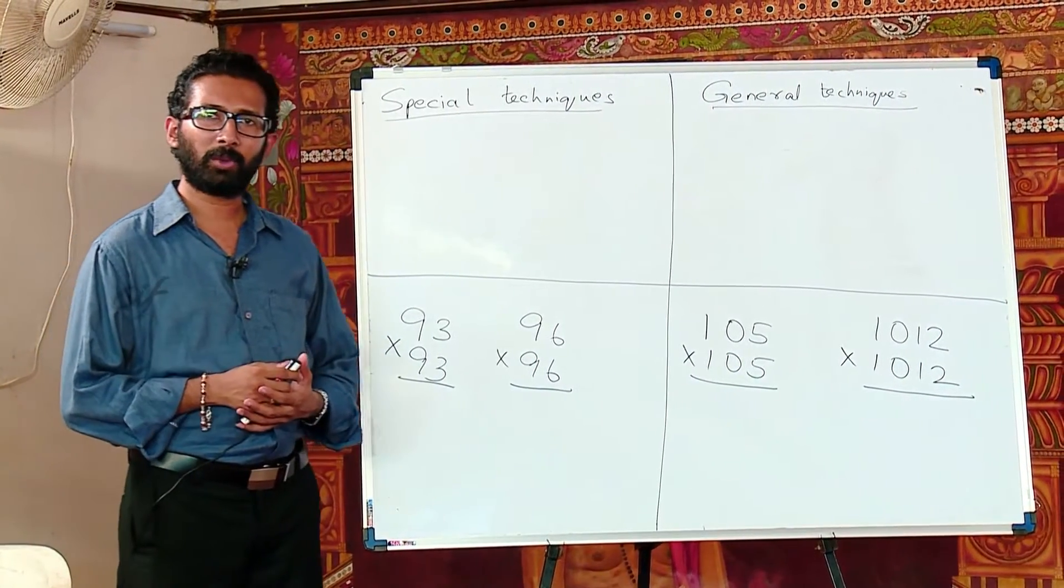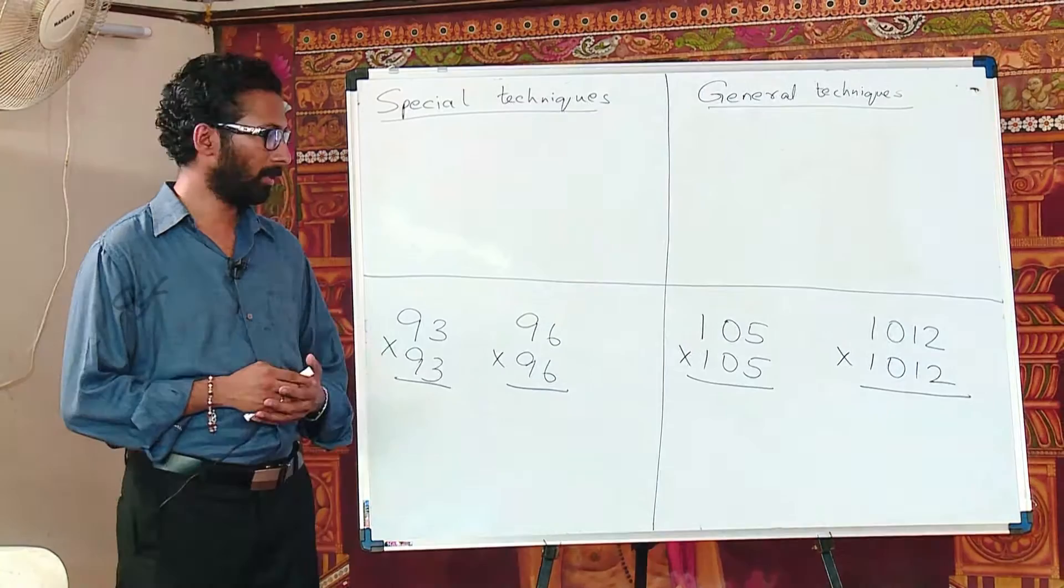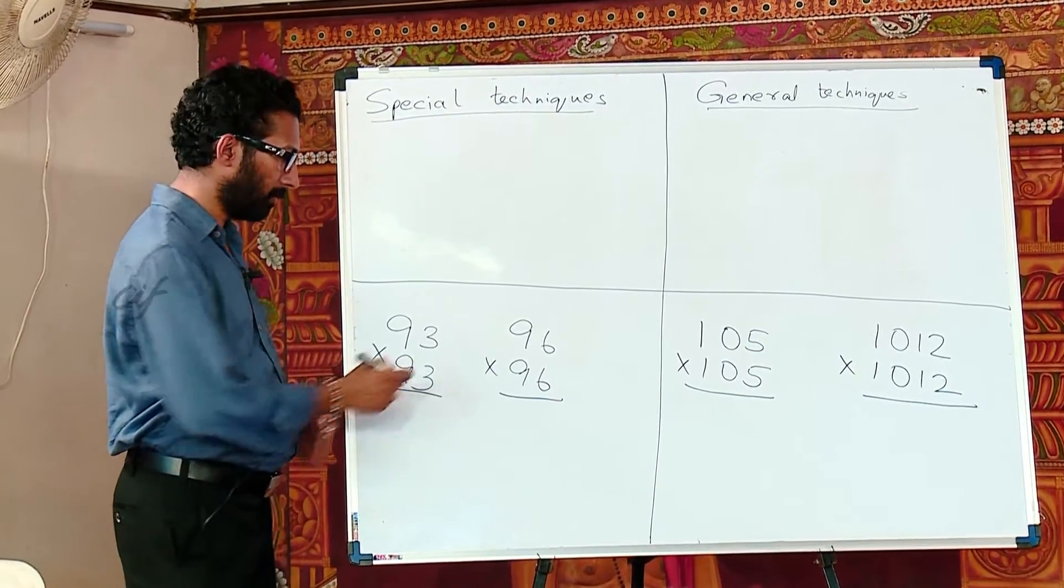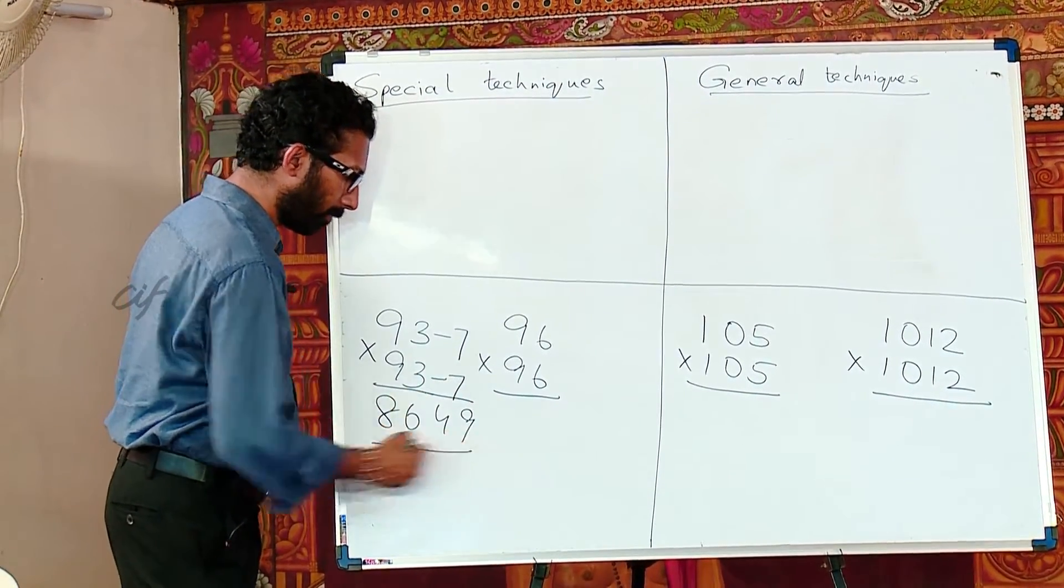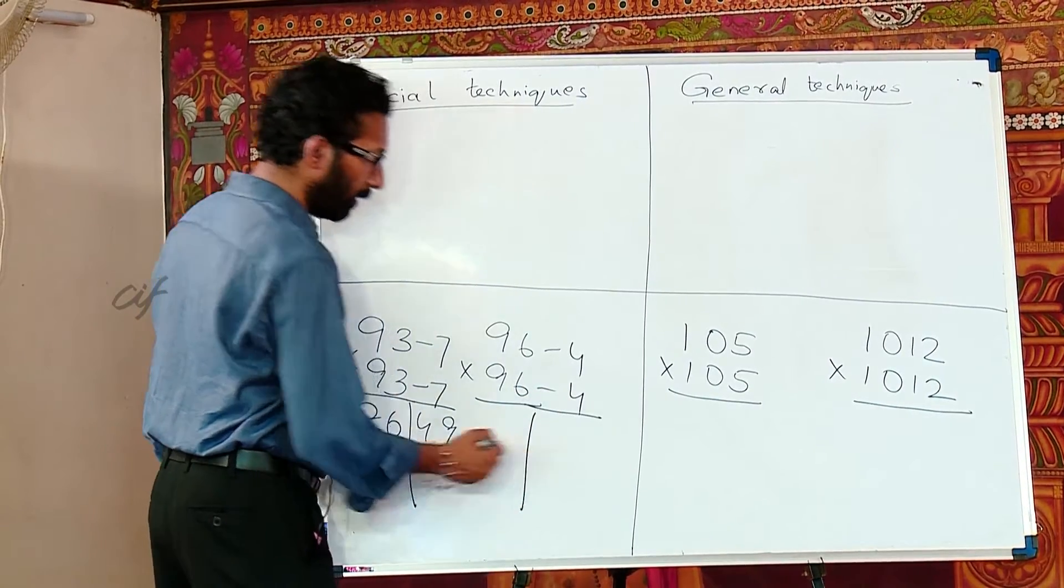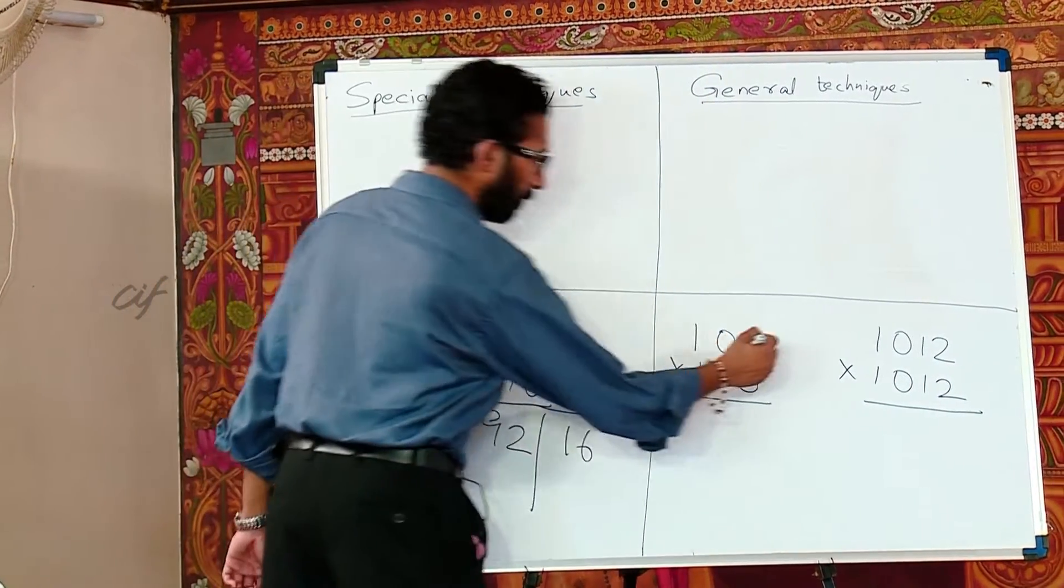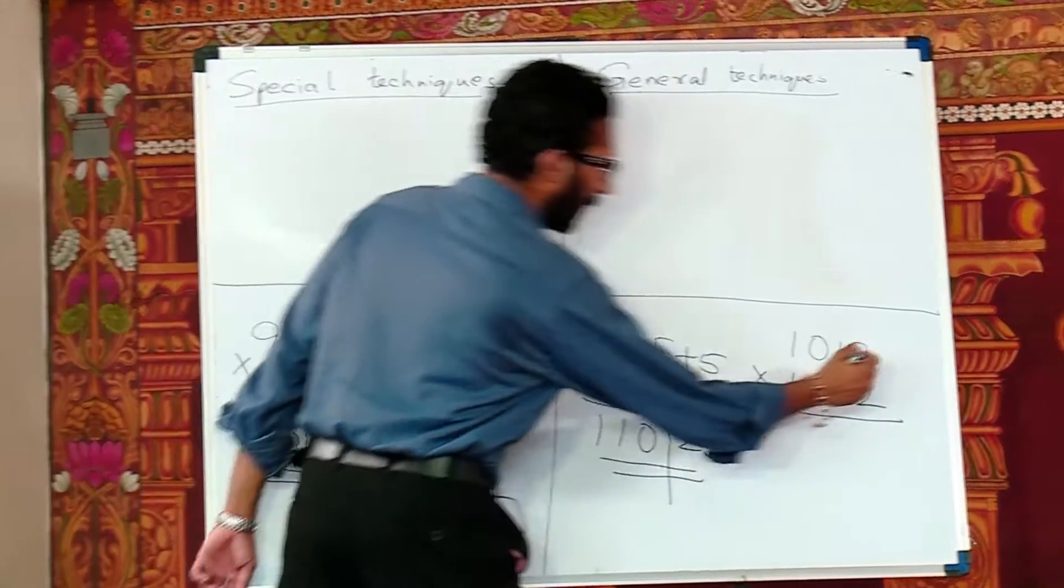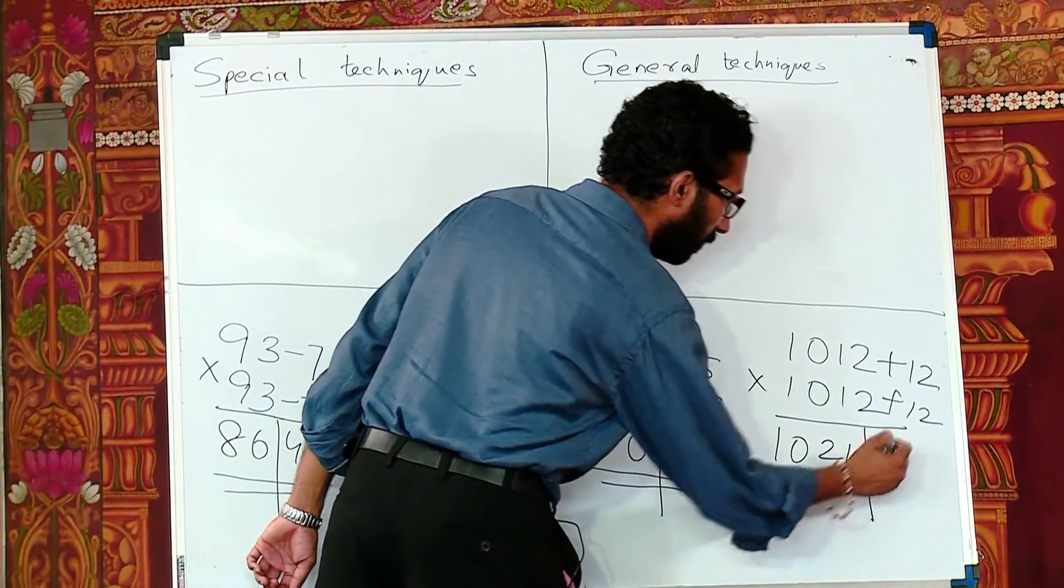So here we have 4 calculations for squaring. As you can see here, there is 93 square, 96 square, 105 square and 1012. So how to square these numbers fast? I will just try to write down the answers and maybe you can figure out how I got the answers. I am just writing a minus 7 and a minus 7 here. So this will be my 8, 6, 4, 9. I have 96 times 96. So I will write a minus 4 and minus 4. That is my 9216. I have a 105 times 105. So I am writing a plus 5 and plus 5. So that gives me 11025 and I write a plus 12 and a plus 12 and get the answer. You are right. It is 1024, 144.